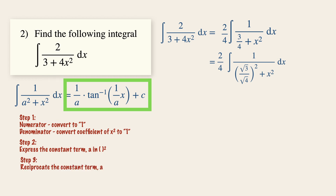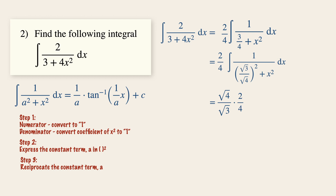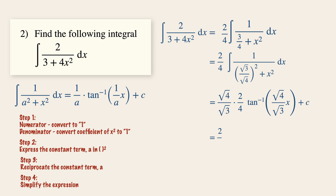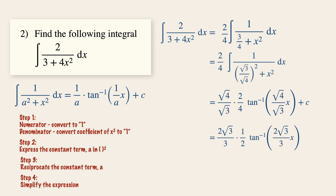We take the reciprocal of square root of 3 over square root of 4, giving us square root of 4 over square root of 3, multiplied by 2 over 4. We introduce the tangent inverse and then square root of 4 over square root of 3 times x, plus c. Since square root of 4 is 2, we rationalize by multiplying square root of 3 on both numerator and denominator, giving us 2 square root of 3 over 3, multiplied by one half, times tangent inverse of 2 square root of 3 over 3 times x, plus c.